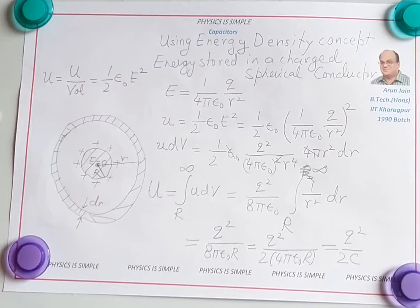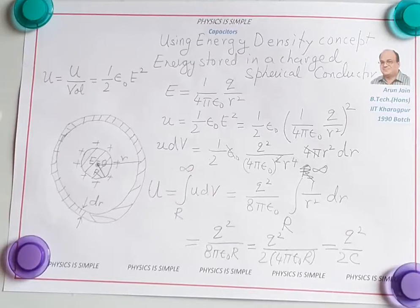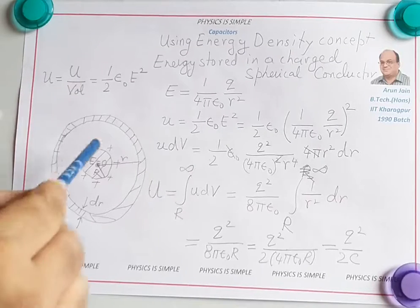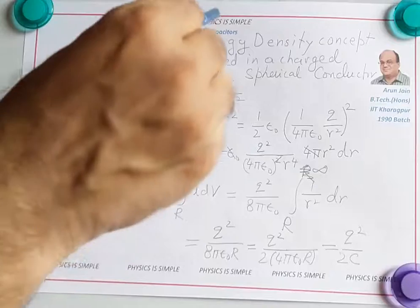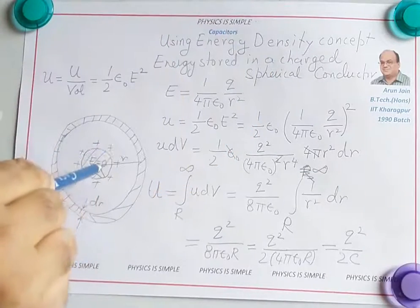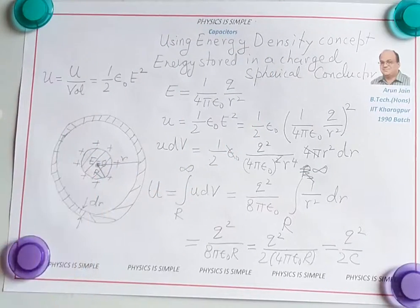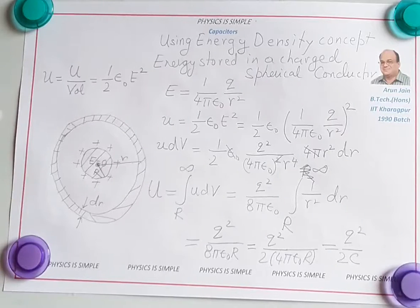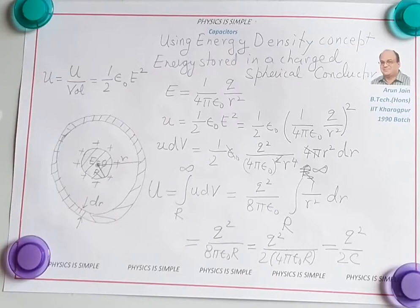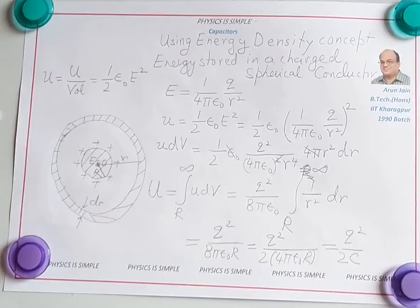To summarize: the energy density is half epsilon naught E squared. The electric field extends from the surface to infinity. We found the electric field at distance r, took a differential spherical shell element of radius r and thickness dr, integrated u dv from R to infinity, and obtained the answer q squared over 2C.